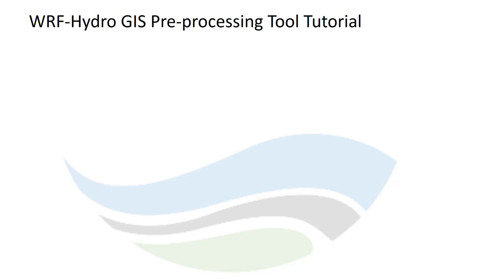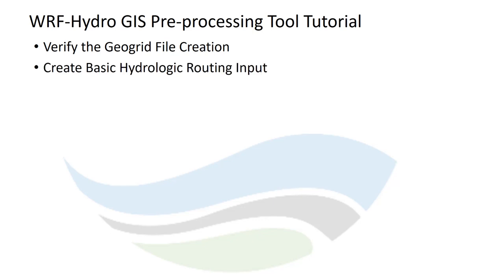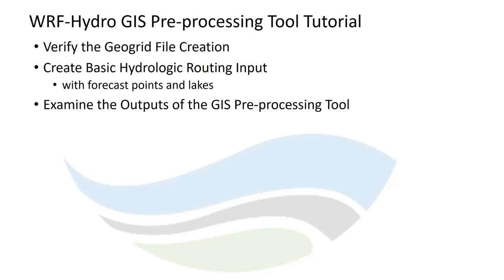The test case is available from our website. We will use the GIS Preprocessing Tool to verify the GeoGrid file creation and domain location. Then we will create basic hydrologic routing input. Next, we will add forecast points and lakes to this routing stack. And finally, we will examine the outputs of the GIS Preprocessing Tool.